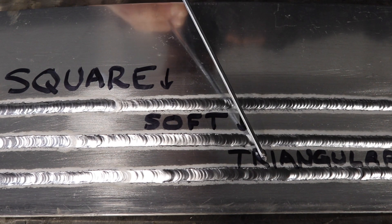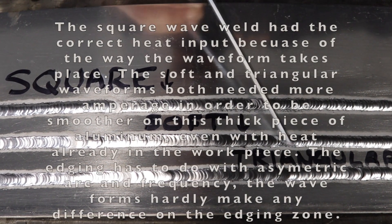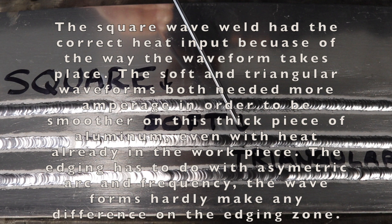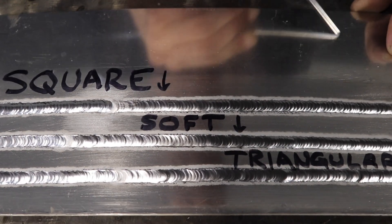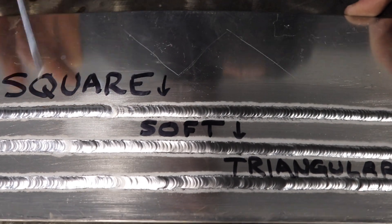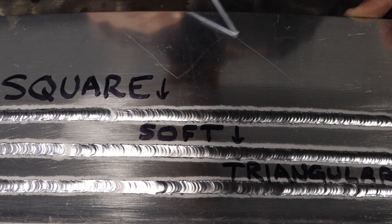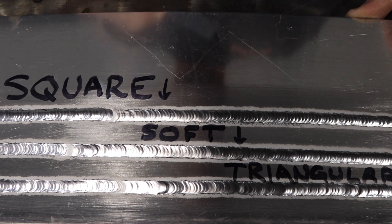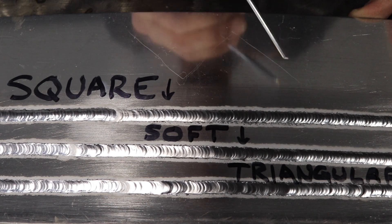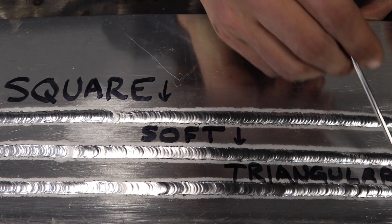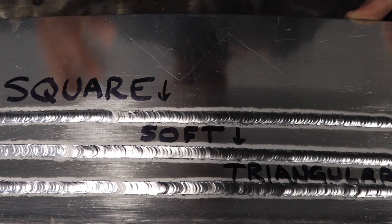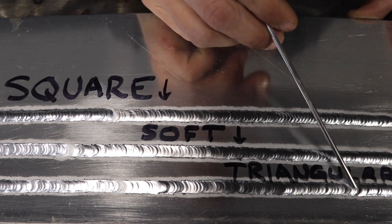On the triangular, it's probably not the prettiest weld — I forgot to actually change the amperage. The thing to remember with triangular is that it welds somewhat like a triangle where you're only spending a little bit of time at the peak, positive and negative. With that, there's less heat input, so I should have jacked up my amperage. It was a little bit sluggish, so that's something to remember.